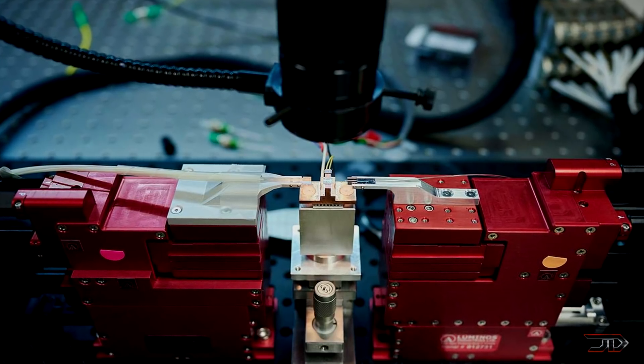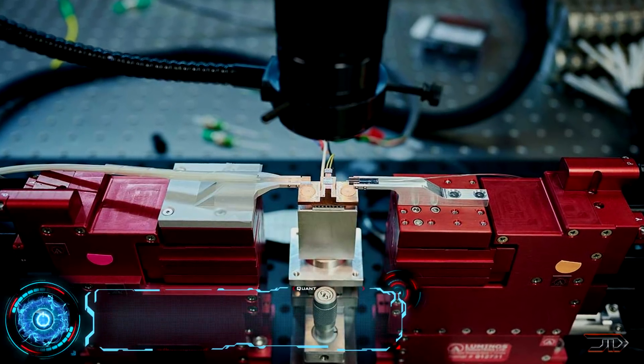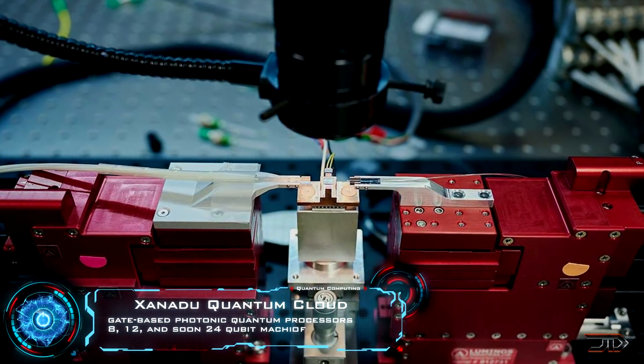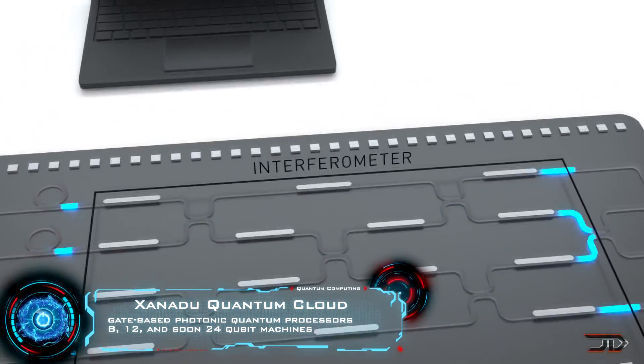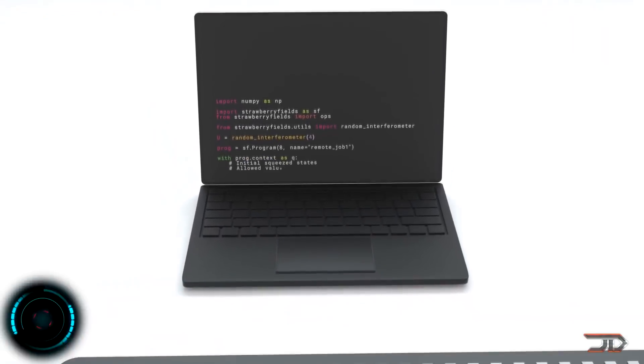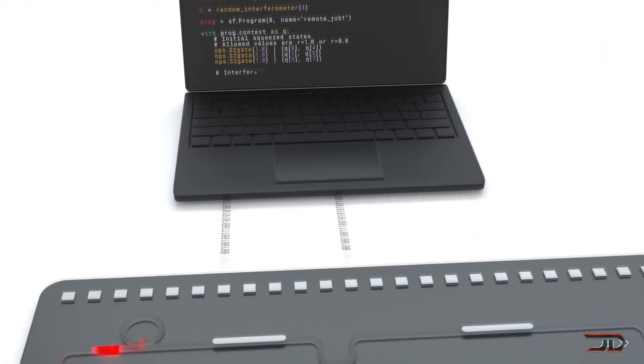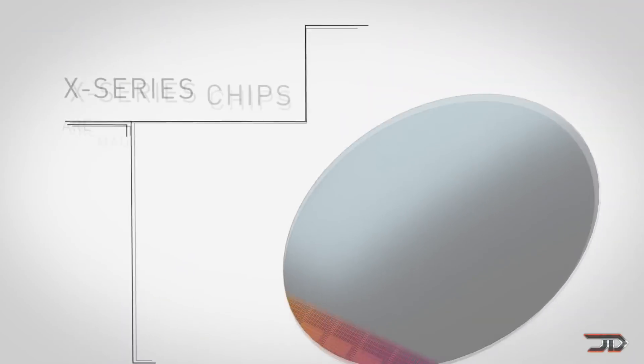Anyways, another really important development is Xanadu's photonic quantum computer. It's also the first commercially available cloud platform of its kind. So they have 8, 12, 24 qubit processors which can run at room temperature. And this approach will work towards a universal fault tolerant quantum computing system which networks multiple processors together.